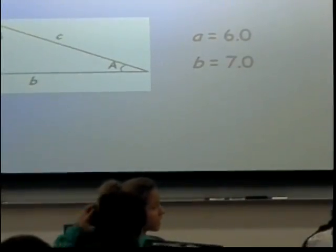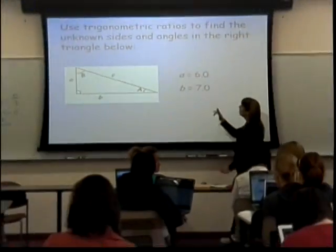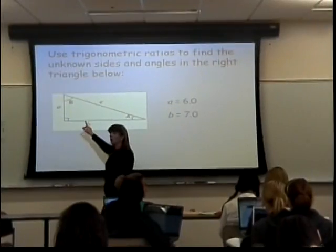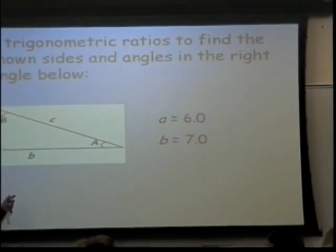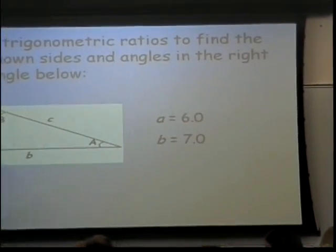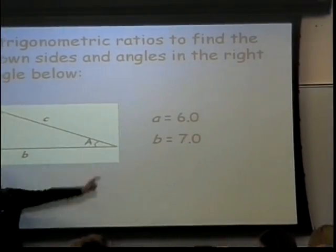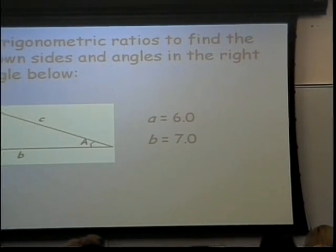Here, we know what A is, we know what B is in terms of the size, but we don't know what angle B and angle A are in terms of the angles.